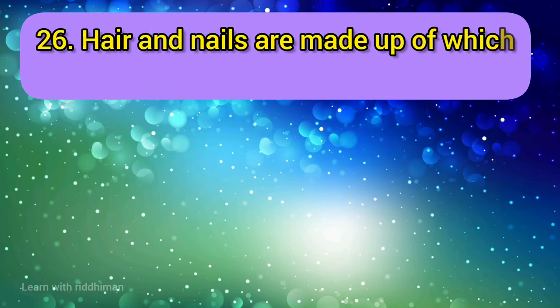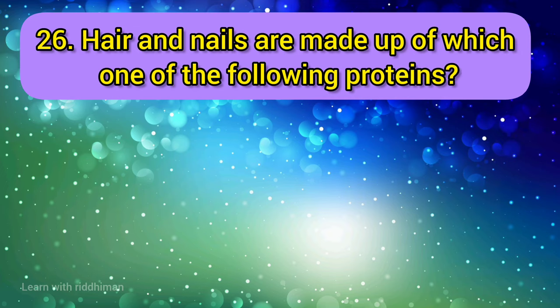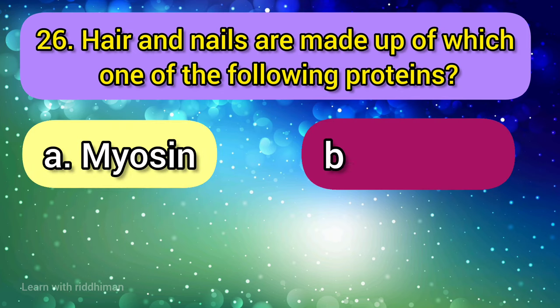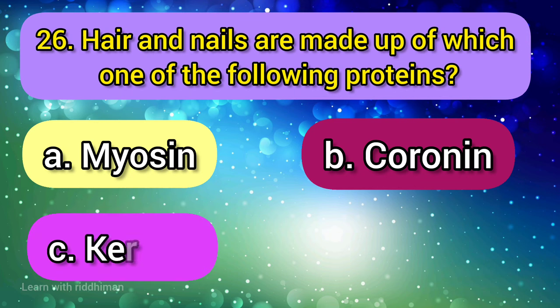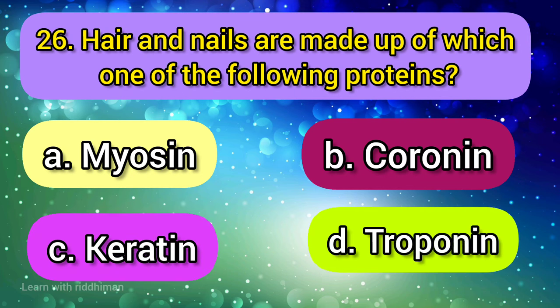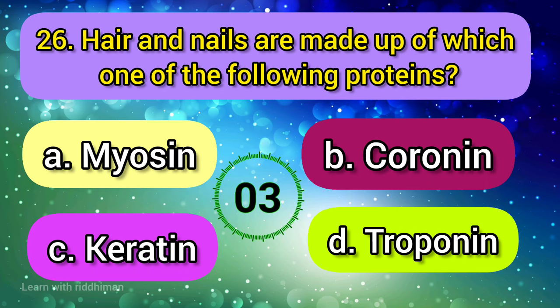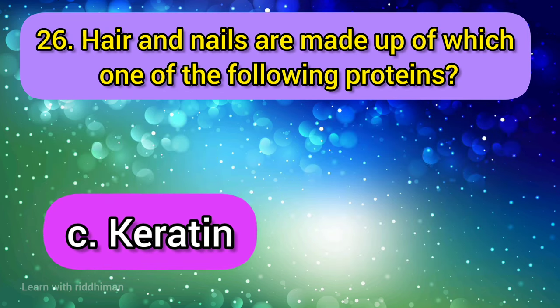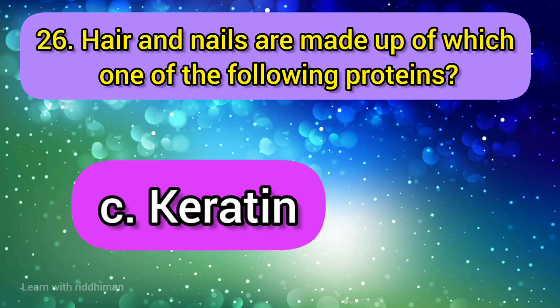Hair and nails are made up of which one of the following proteins? Myosin, coronin, keratin, troponin. Answer is keratin.